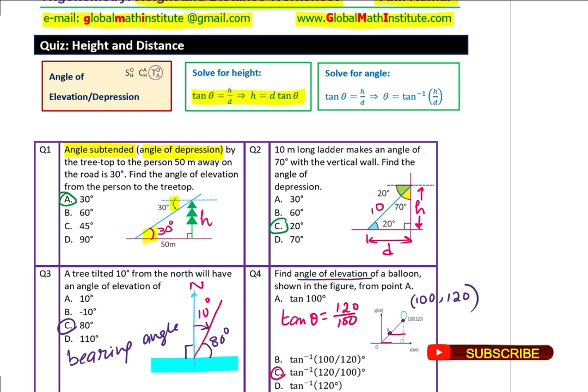So, I hope with this, you understand how we apply tangent ratio in height and distance questions to solve, find height or the distance or the angle. I will appreciate if you could actually look at these questions from different angles and get more out of the same questions.